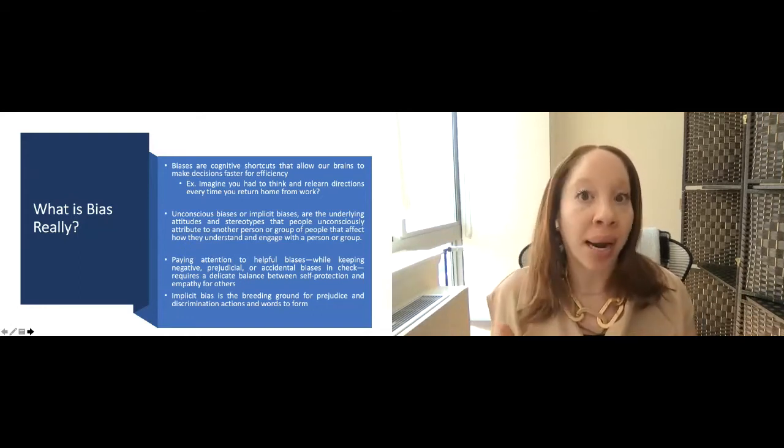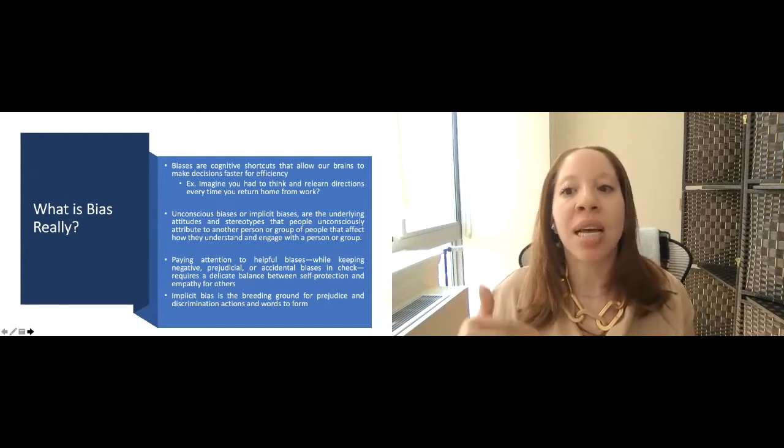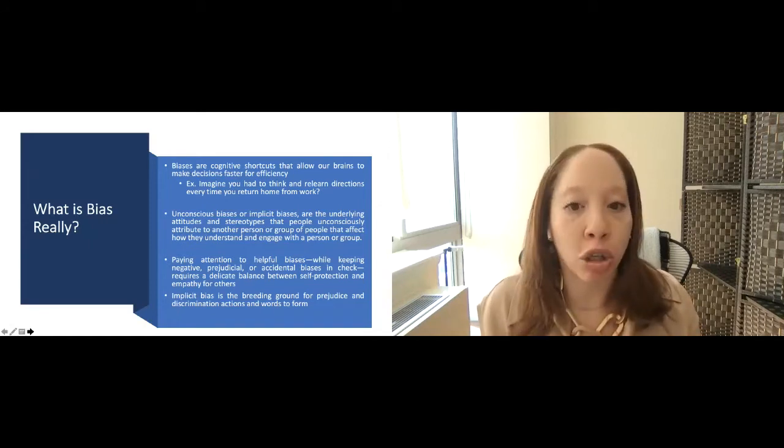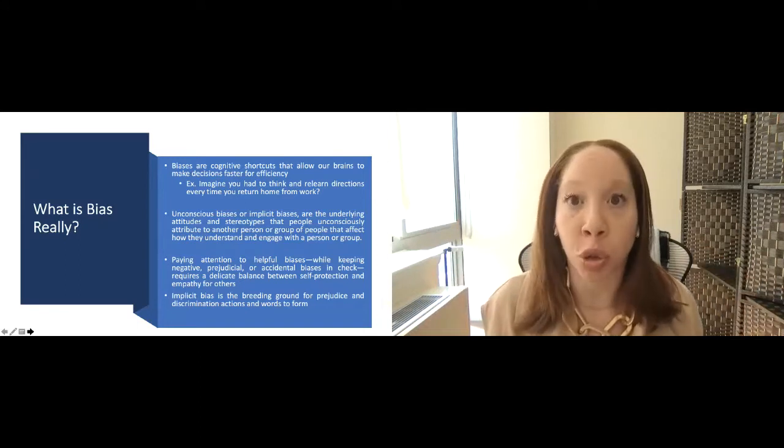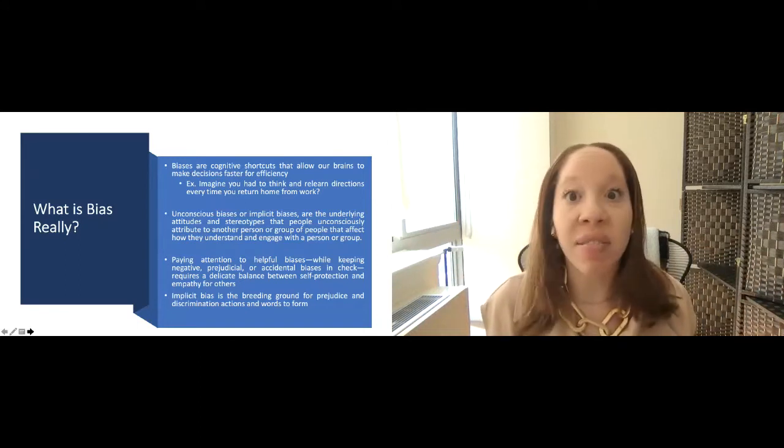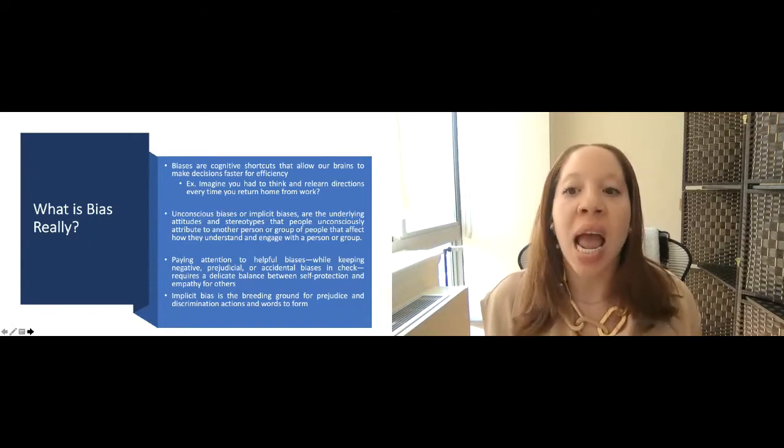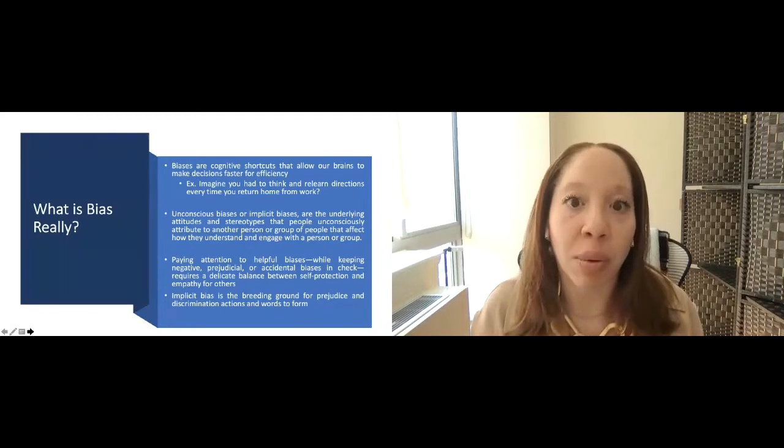So we need to be aware that biases exist, then while also keeping our negative prejudice biases in check, because it requires a very delicate balance to understand. And when you have that implicit bias, when you have thoughts or judgments towards a racial group that are not justified on any facts or any being, that's when you start to get into very dangerous territory. And those really become the breeding ground for more prejudiced behavior and language down the line.